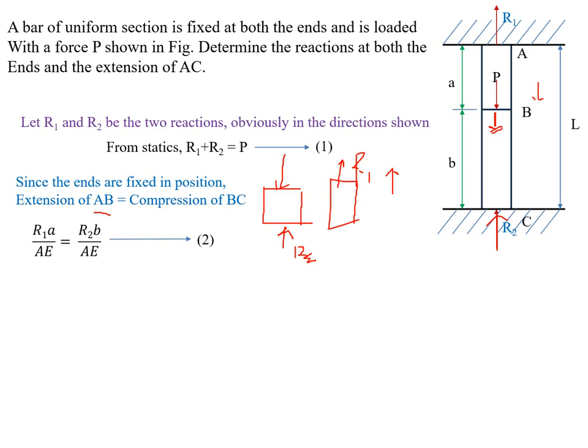Using the deformation formula delta = PL/AE, where P is the net force applied to the member: for AB, the net force is R1, so deformation = R1·a / AE, where 'a' is the length of AB. For BC, deformation = R2·b / AE, where 'b' is the length of BC. Since AE cancels out, we get the compatibility relation: R1·a = R2·b.